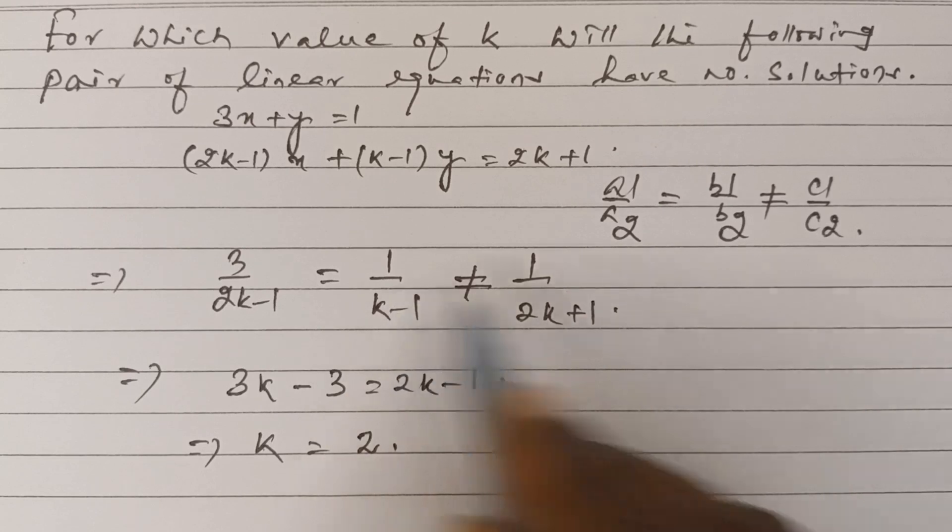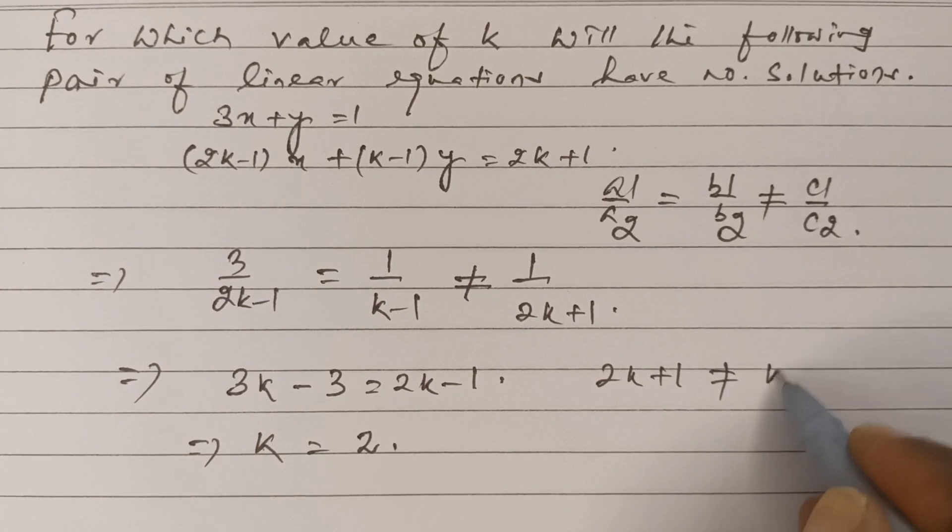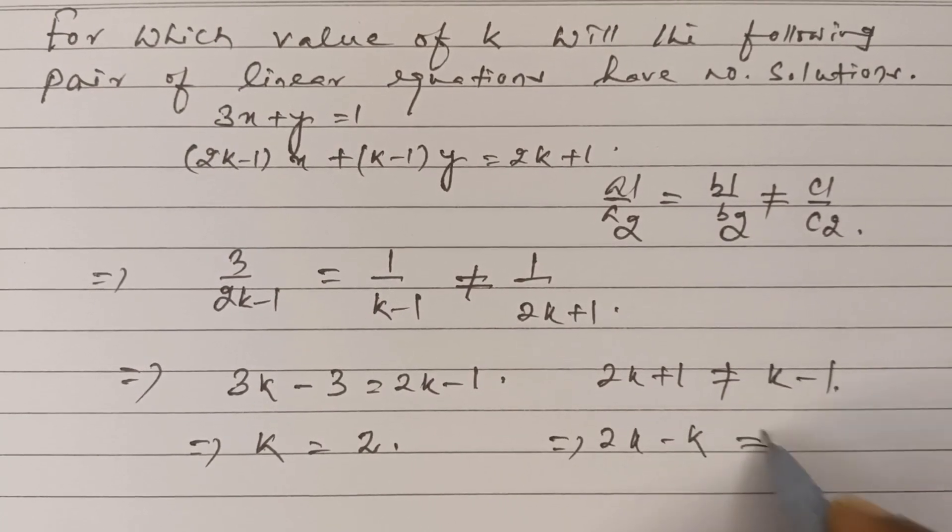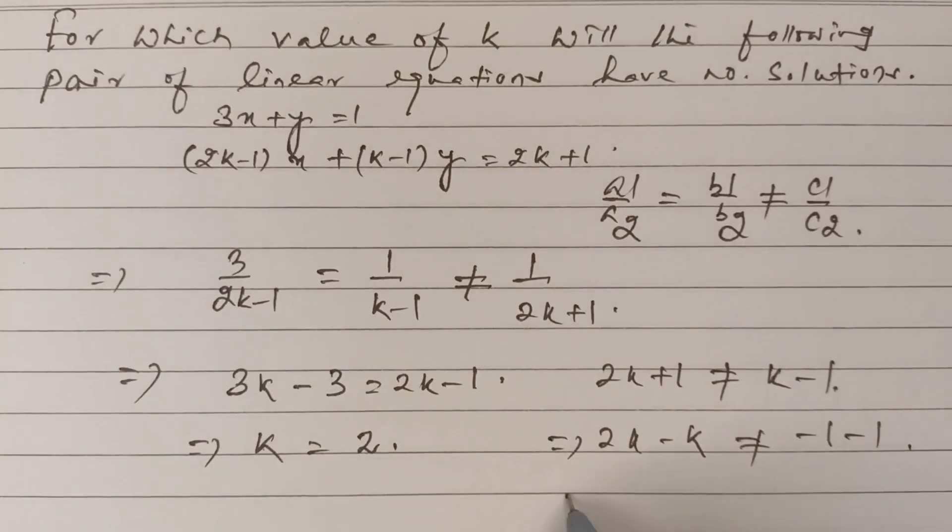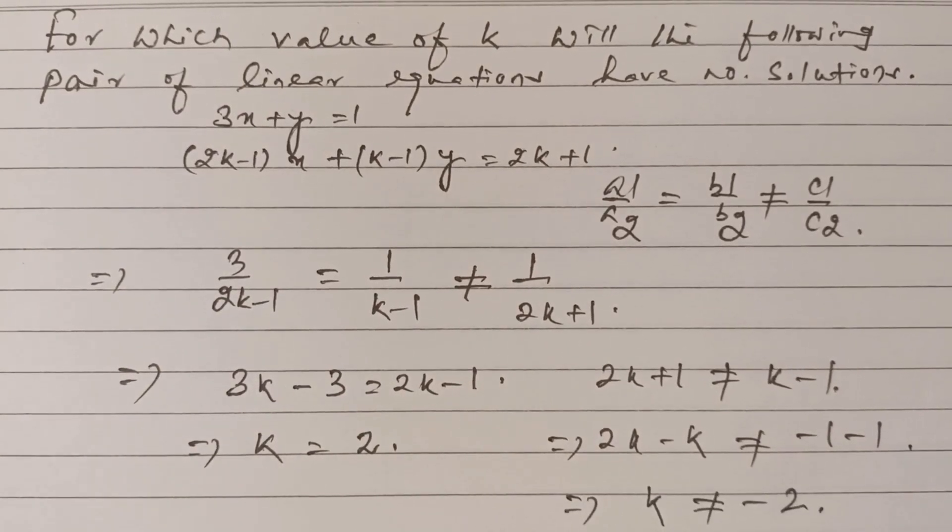Equating second and third, we get 2k plus 1 is not equal to k minus 1. So 2k minus k is not equal to minus 1 minus 1. k is not equal to minus 2, the answer.